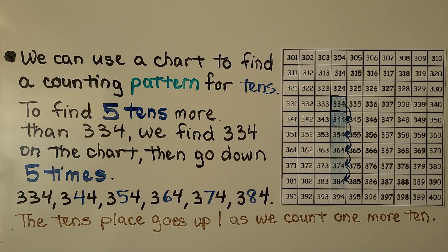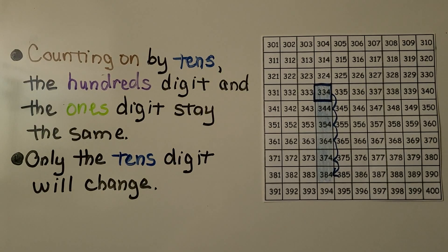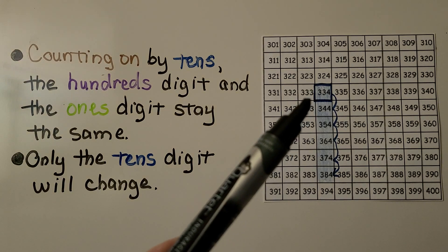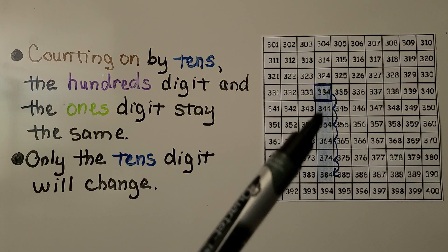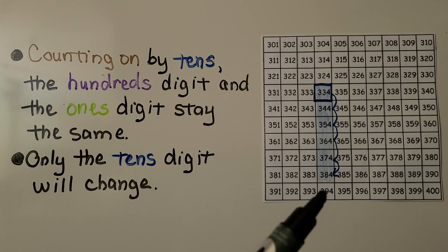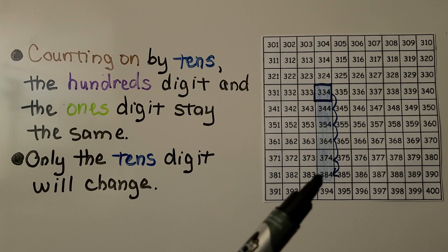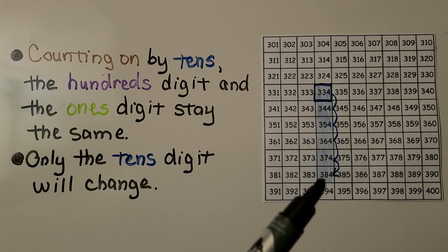The 10s place goes up by 1 as we count 1 more 10. When counting on by 10s, the 100s digit and the 1s digit stay the same — only the 10s digit will change. We can see the 100s digit is staying as a 3, the 1s digit is staying as a 4, but the 10s digit is going up by 1 for each number.